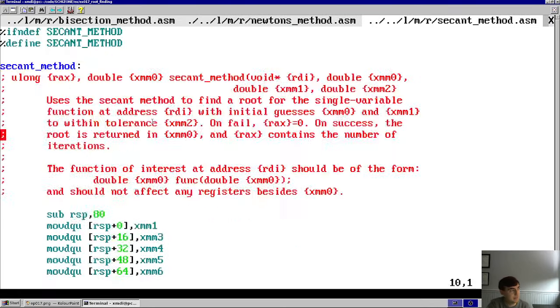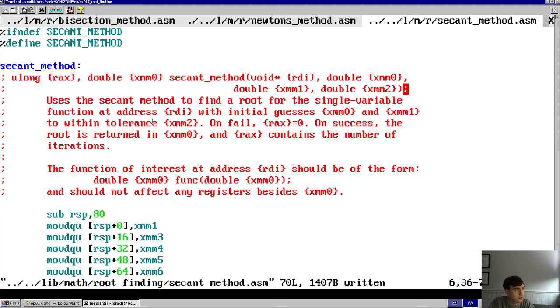Last would be the secant method, very much the same thing, but remember, secant method, you don't have to pass in a slope function, so you're only passing in the function pointer to the f function itself. As well as, in this case, you have to pass in two guesses, two guesses to construct the slope, right? So, you pass in two guesses in x of m0 and x of m1, as well as a tolerance in x of m2. Put a parenthesis there, and that's it, that's the functions that we're talking about in today's video.